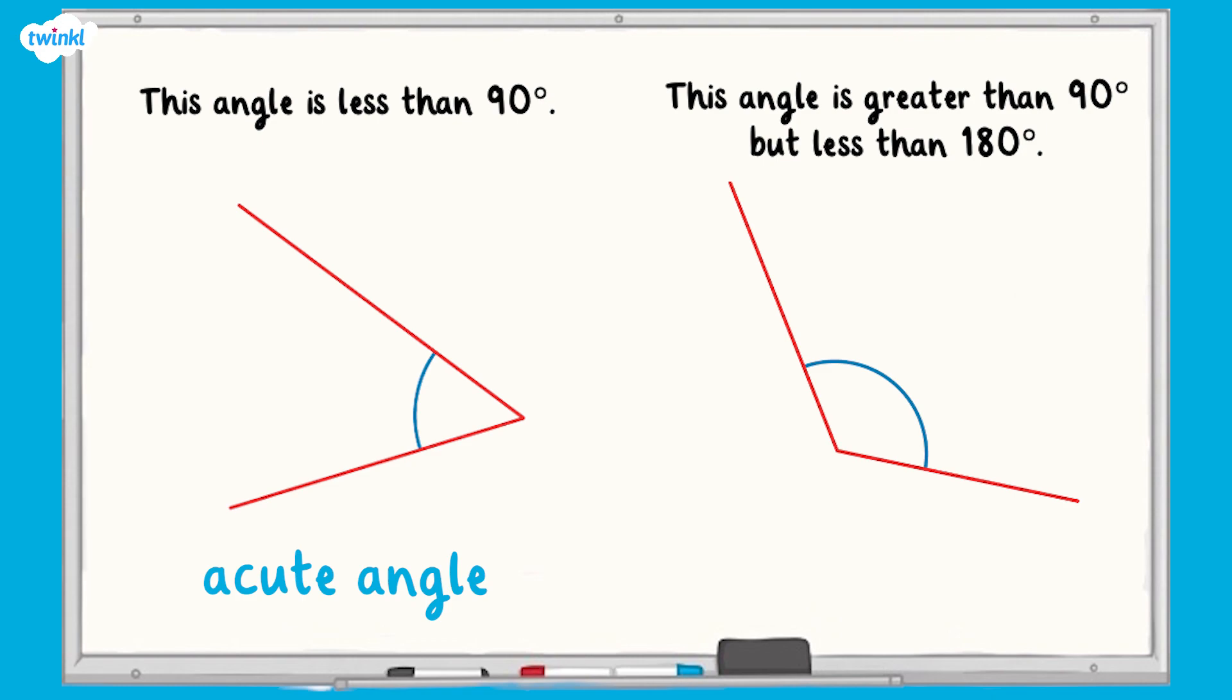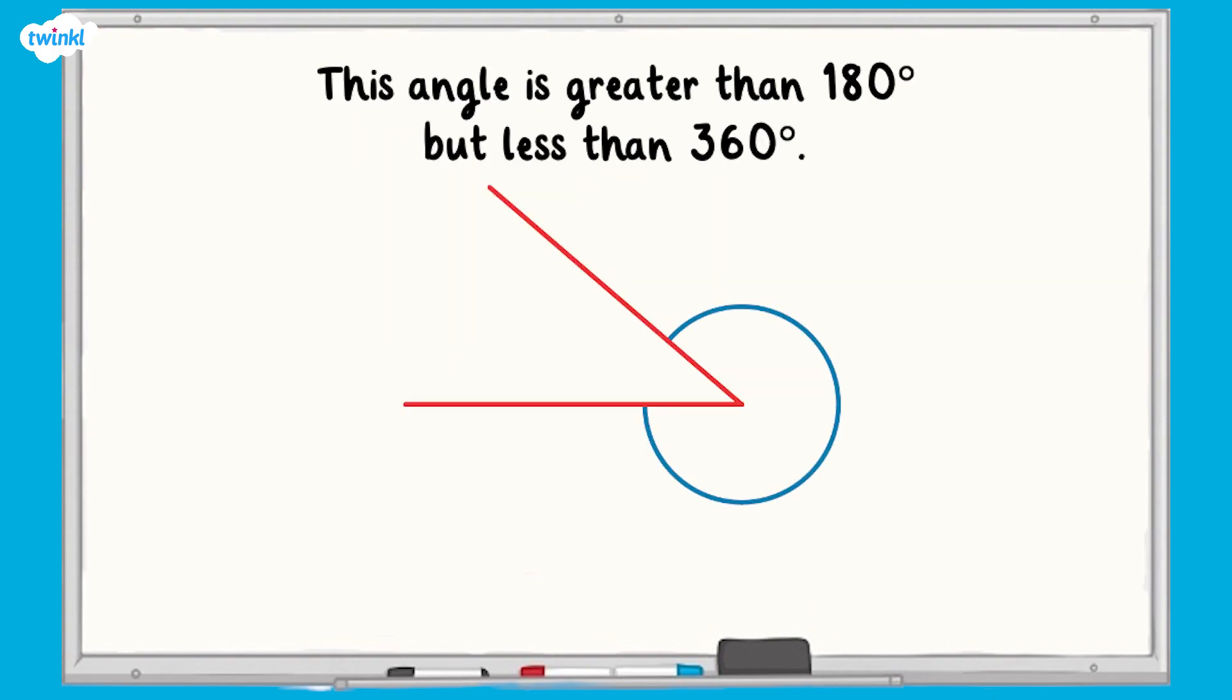This angle is greater than 90 degrees but less than 180 degrees. It's an obtuse angle. This angle is a bit trickier to identify. It's the angle on the outside.